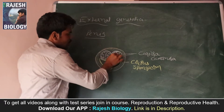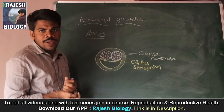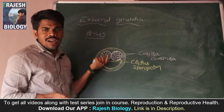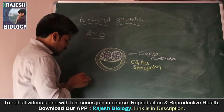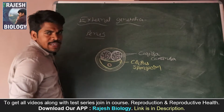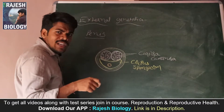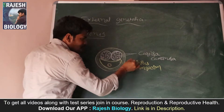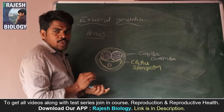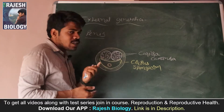Corpora cavernosa is the connective tissue which is helpful for the erection of the penis, and it is present on the dorsal aspect. Now, the corpus spongiosum contains the urethra inside it. That's why the urethra present in the penis is called the penile urethra or spongy urethra — because it is present in the corpus spongiosum. This spongy urethra transfers sperm cells during copulation or at the time of insemination.